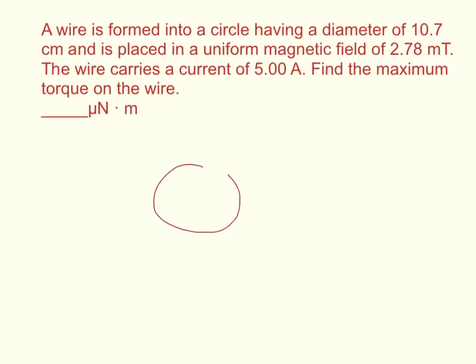So I have a wire here, a circle. Its diameter is 10.7 centimeters or 0.107 meters. That means its radius is half of that, so 0.107 over 2.